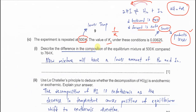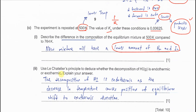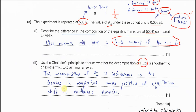Part C, part one: describe the difference in the composition of the equilibrium mixture at 500 K. At lower temperature, Kc is lower and product is lesser, so the new mixture will have a lower amount of the products H₂ and I₂. Part two: using Le Chatelier's principle, deduce whether decomposition of HI is endothermic or exothermic. The decomposition of HI is endothermic, because as temperature decreases, the position of equilibrium shifts to the exothermic direction, which is to the left. So the forward reaction — the decomposition of HI — is endothermic because the backward reaction is exothermic.